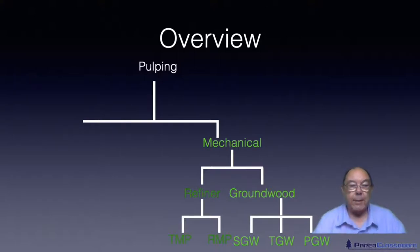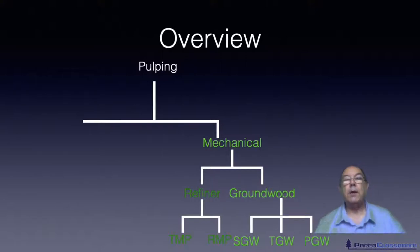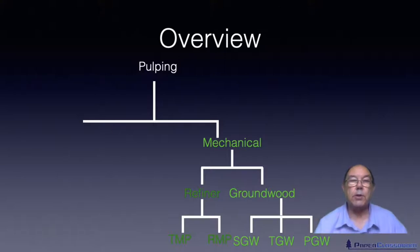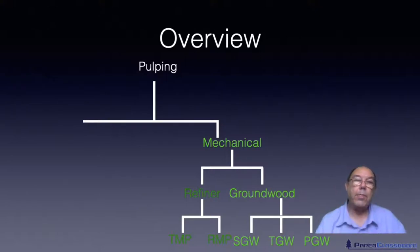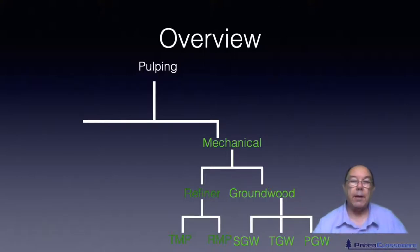The other refiner method was TMP — thermal mechanical pulp. Just as with the logs, you put more heat in to soften the lignin more so that you get less damage when you tear the fibers out. With TMP you actually inject the wood chips with steam to put heat into them prior to feeding them into the eye of the disc refiner.